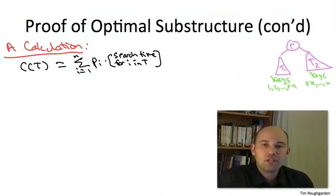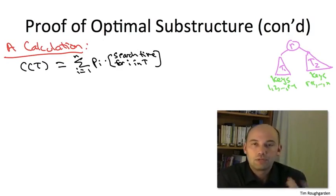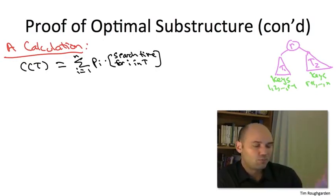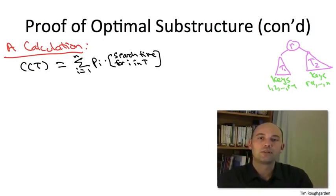So to write weighted search time in T in terms of the weighted search time in T1 and T2, it's going to be convenient to bucket the items into three categories: those that are in the left subtree T1, i.e., 1 through r-1; those in the right subtree T2, r+1 through n; and then of course, left over is the root r itself. So let's just break down this sum into its three constituent parts.